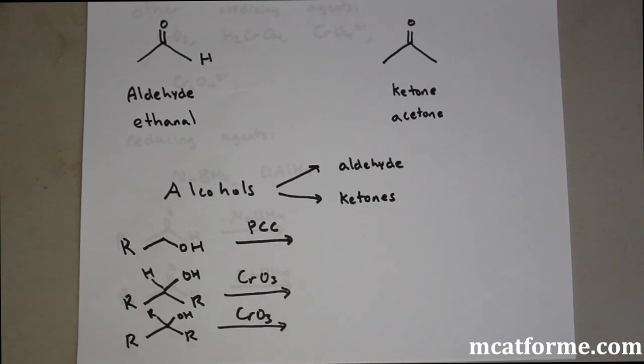This example I drew here is ethanal, and that is the common name acetone that's most likely going to be called on the MCAT. In terms of how do we make these compounds - how do you make aldehydes and ketones - the most common way is forming them from alcohols.